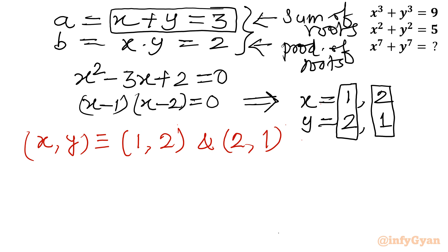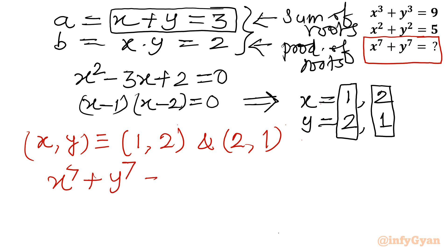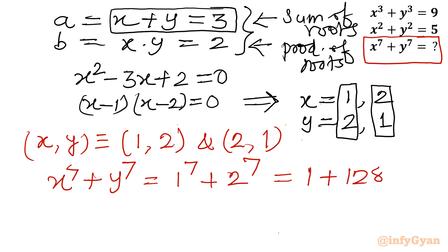Both are integer values. We have to evaluate x⁷ + y⁷. So x⁷ + y⁷ = 1⁷ + 2⁷ = 1 + 128 = 129. Our final answer is 129.